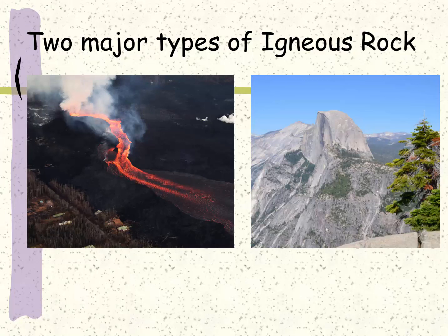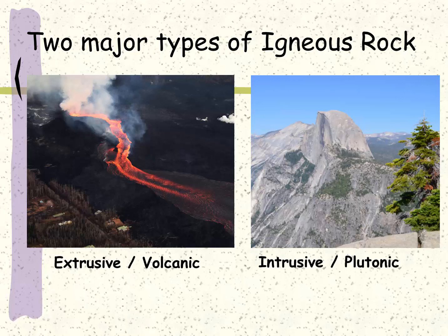There are two major types of igneous rocks. You can see drastically different pictures — the one on the left taken in Hawaii during the large eruption in 2018, and the one on the right taken in Yosemite in California. The picture on the left shows extrusive igneous rocks and the one on the right shows intrusive igneous rocks.